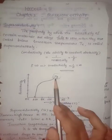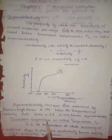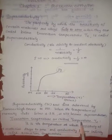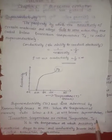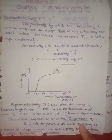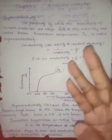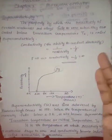So this temperature, 4.2 Kelvin, is called Mercury's transition temperature. Now, how do we define transition temperature or critical temperature Tc? It is the temperature at which the resistivity of the material becomes zero and conductivity becomes infinity.